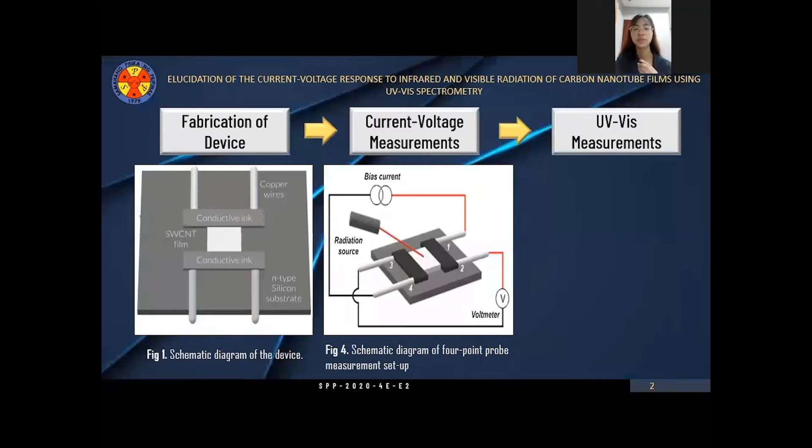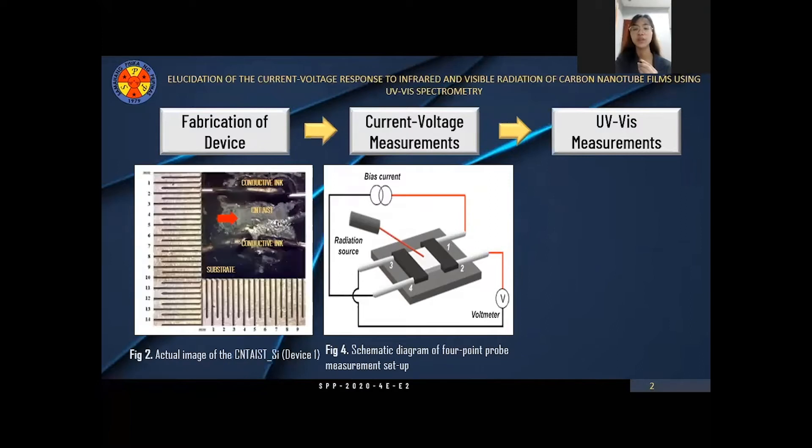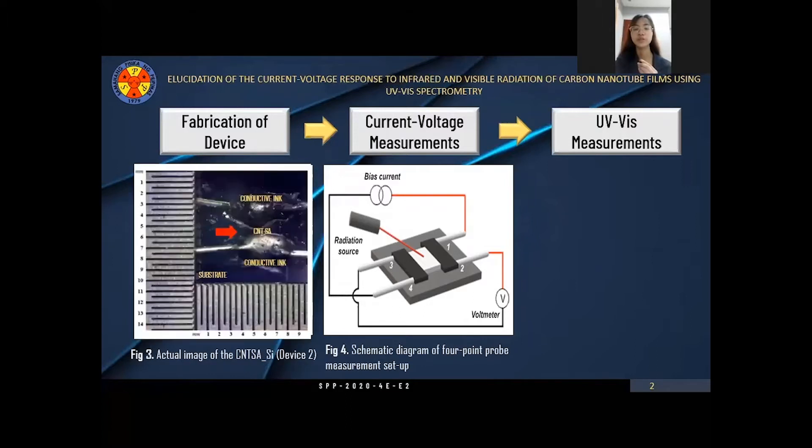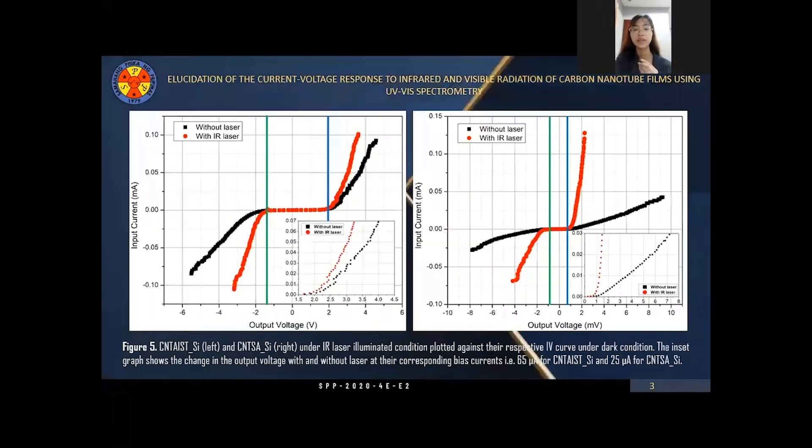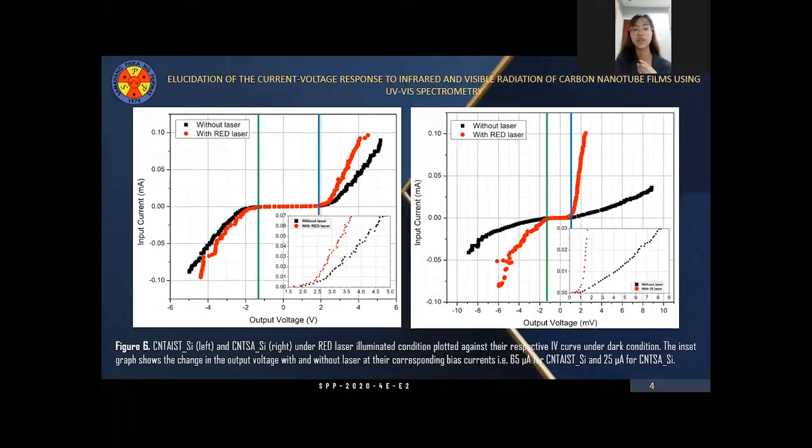The device was fabricated by drop casting two types of CNTs on an n-type silicon substrate. For device 1, the absorber used this e-tip synthesized CNT, while for device 2, a commercial CNT was used. The IV versus T measurement were performed using 4-point probe measurement setup, while the absorption spectra of CNTs were obtained using UV-Vis spectrophotometer. The IV curves of the two devices under IR and red laser both showed a non-linearity indicative of its semiconducting nature.